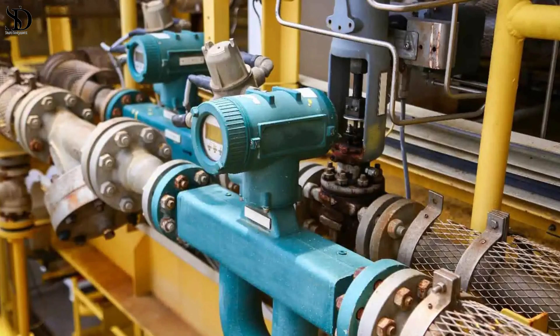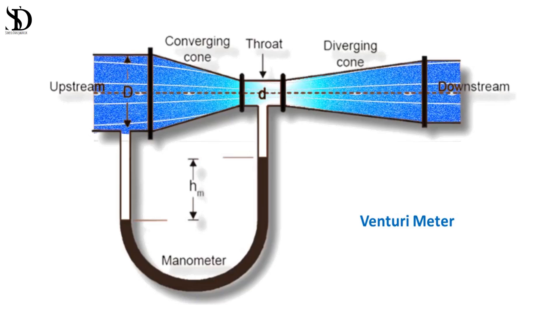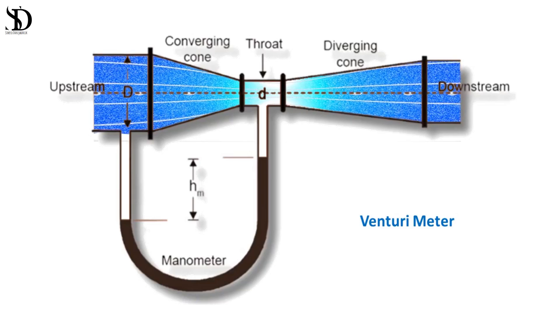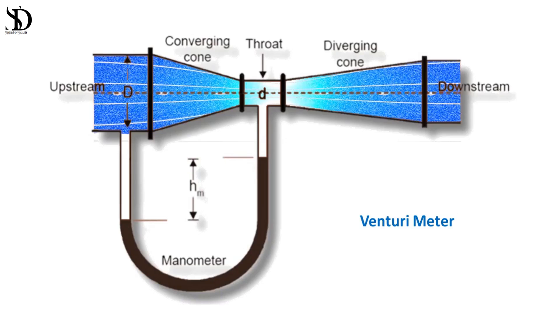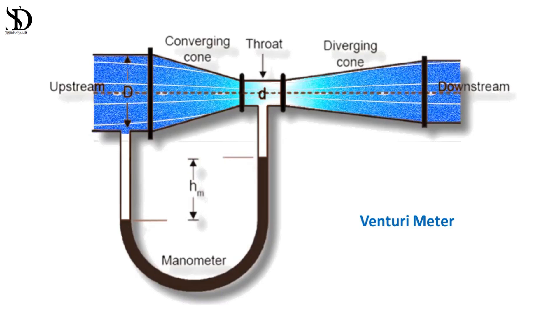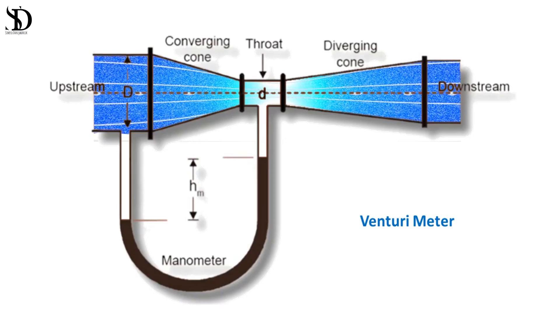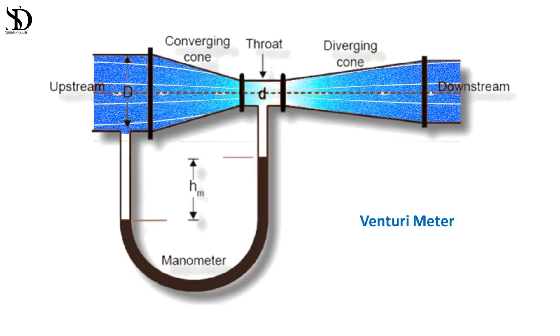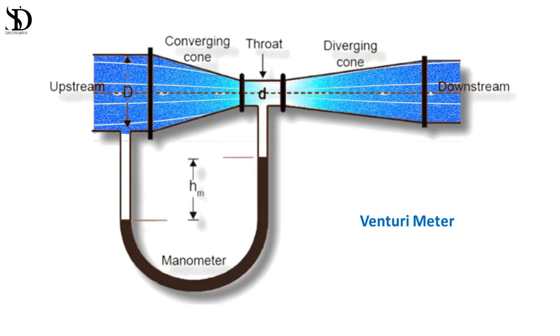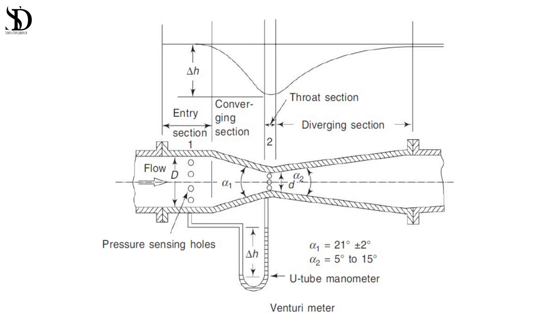Venturi tubes principle: venturi tubes are more complex than orifice plates, featuring a converging and diverging section in the pipeline. The constriction causes an increase in flow velocity leading to a decrease in pressure that can be measured to calculate the flow rate accurately.